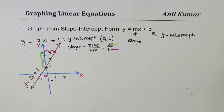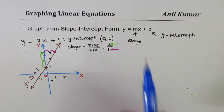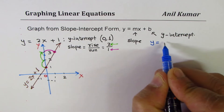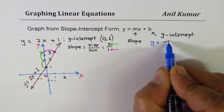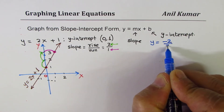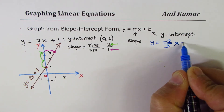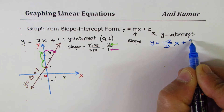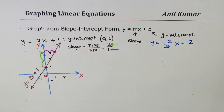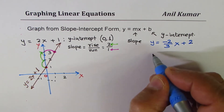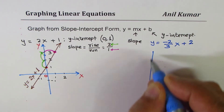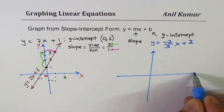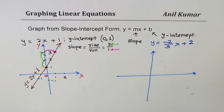Let's take another example using fractions: y equals minus 2 over 3 times x plus 2. That means the y-intercept is plus 2 and the slope is minus 2 over 3.